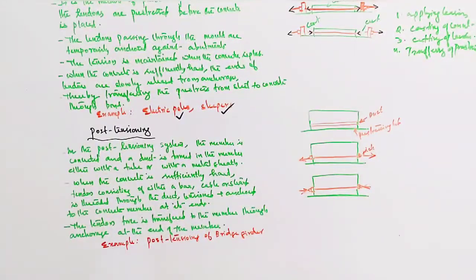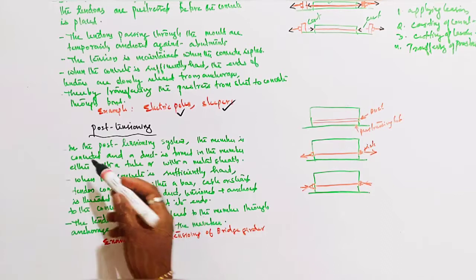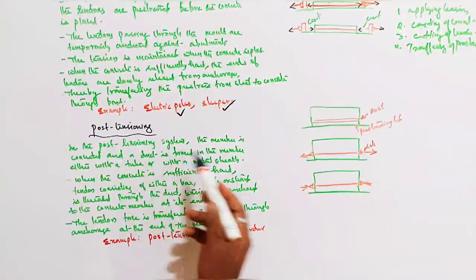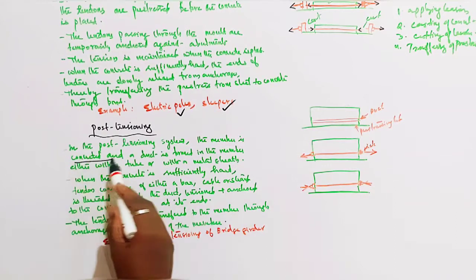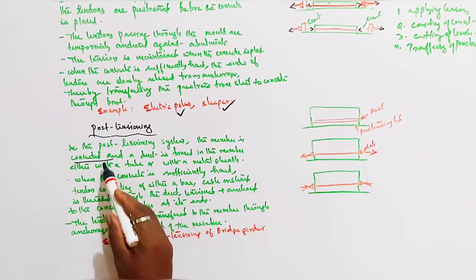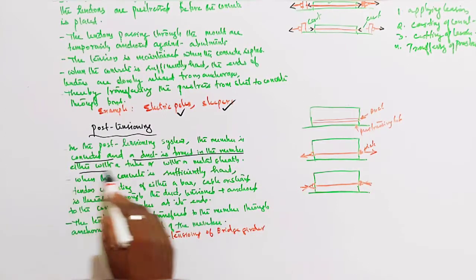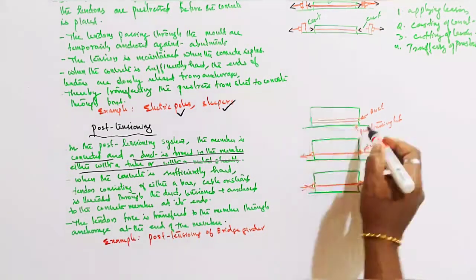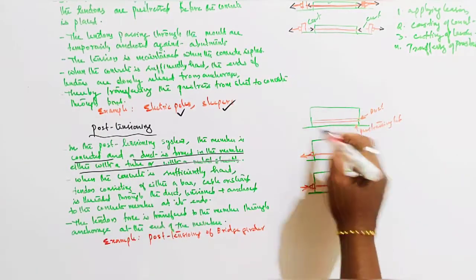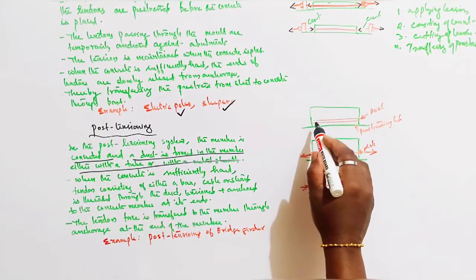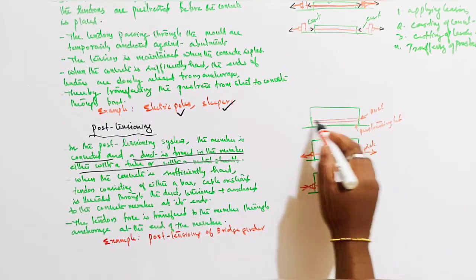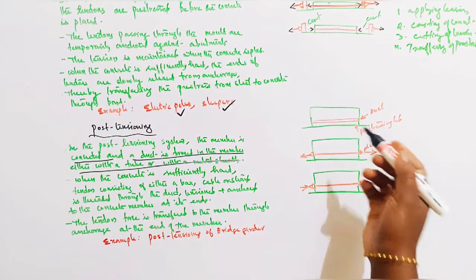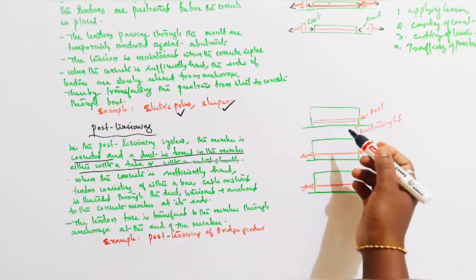Next: post-tensioning. In the post-tensioning system, the member is first concreted, and a duct is formed in the member either with a tube or with a metal sheath. First, concrete is cast with a duct formed using metal sheath or tube.